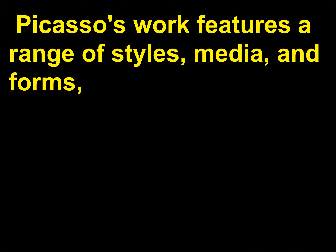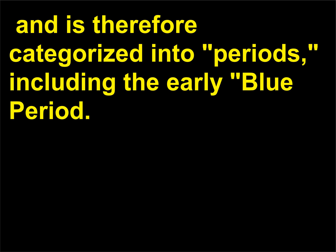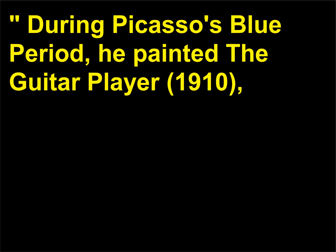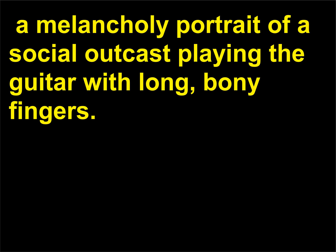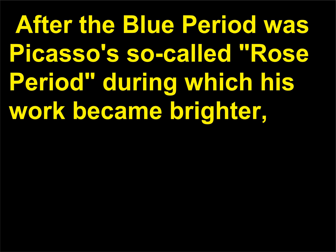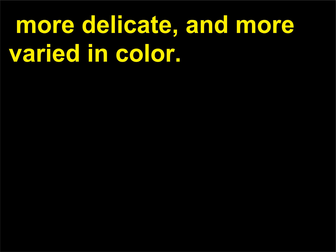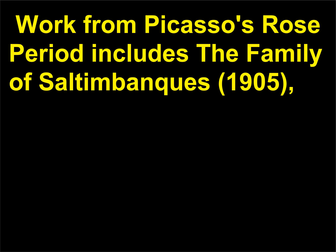Picasso's work features a range of styles, media, and forms, and is therefore categorized into periods, including the early Blue Period. During Picasso's Blue Period, he painted the Guitar Player (1910), a melancholy portrait of a social outcast playing the guitar with long, bony fingers. After the Blue Period was Picasso's so-called Rose Period, during which his work became brighter, more delicate, and more varied in color. Work from Picasso's Rose Period includes the Family of Saltimbanques (1905), a painting that depicts a group of traveling acrobats appearing lost in a desolate landscape.